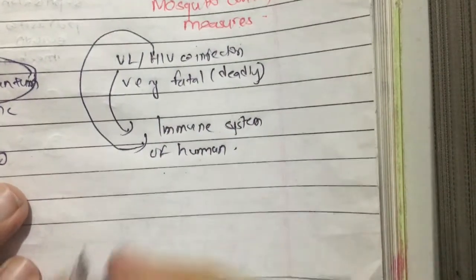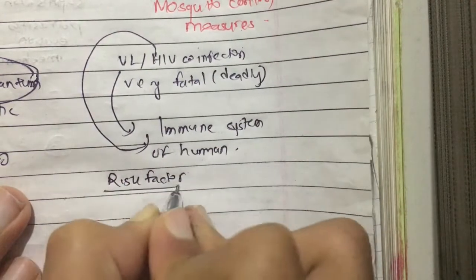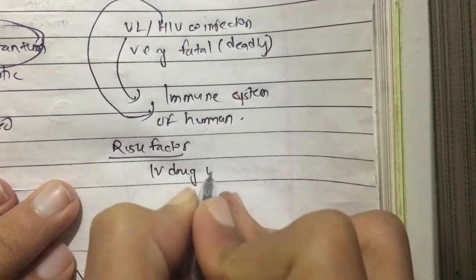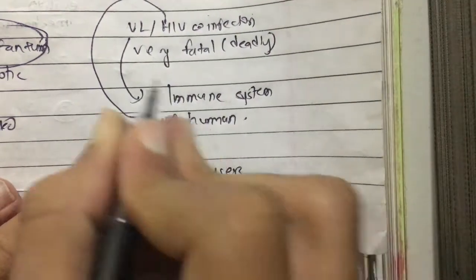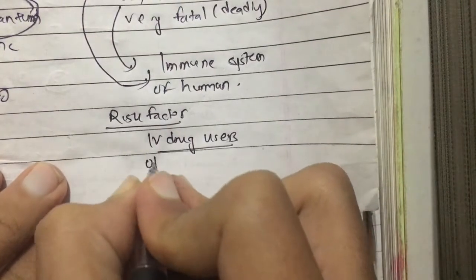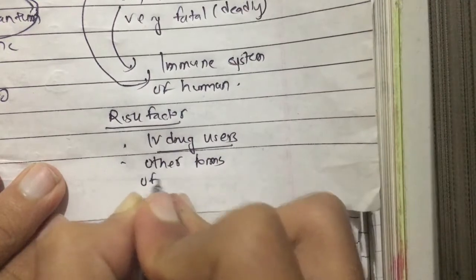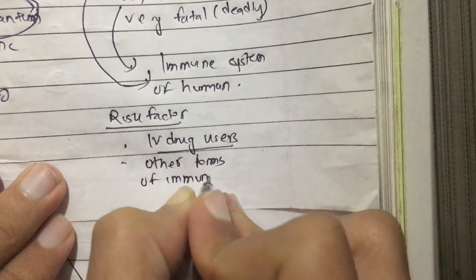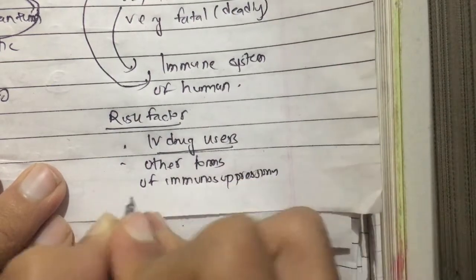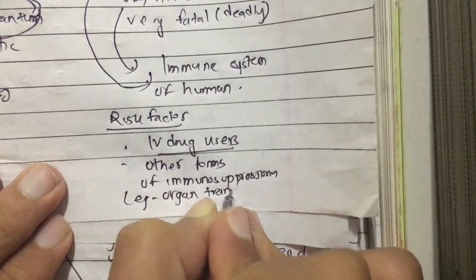Risk factors for visceral leishmaniasis and HIV co-infection include intravenous drug users, who can acquire both infections, and other forms of immunosuppression such as persons undergoing organ transplantation.